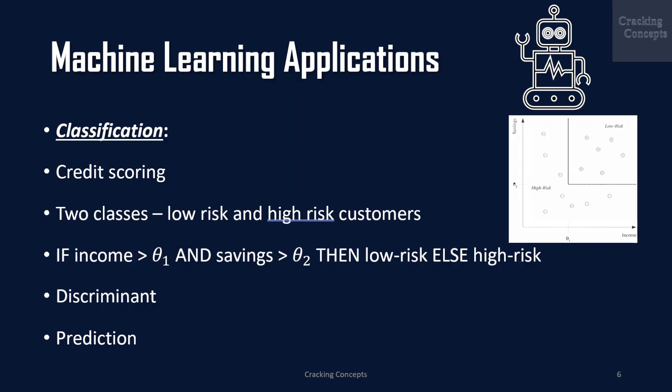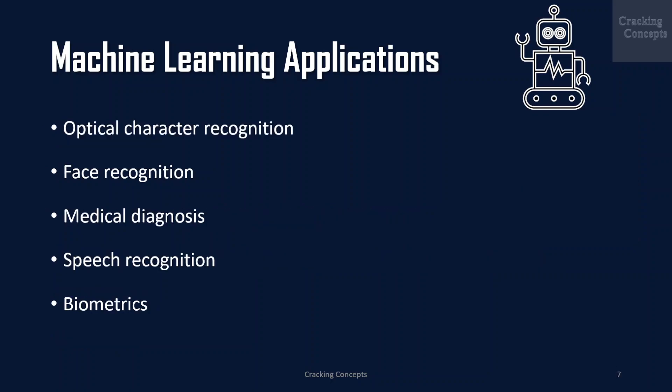After training with the past data, the classification rule learned may be of the form: if income is greater than θ1 and savings greater than θ2, then low risk; else high risk, for suitable values of θ1 and θ2. This is an example of a discriminant — a function that separates the examples of different classes. Having a rule like this, the main application will be prediction. Once we have a rule that fits the past data, if the future is similar to the past, then we can make correct predictions for novel instances.